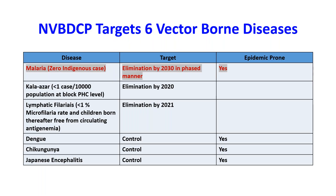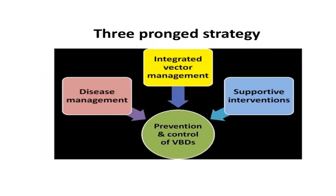Coming on to the targets for the NVBDCP: under this program for malaria, the target is to eliminate malaria by 2030 in a phased manner. Since malaria is epidemic-prone, the target is to achieve zero indigenous cases from the population currently staying in India by 2030. The three-pronged strategies for the NVBDCP are disease management, integrated vector management, and supportive interventions.